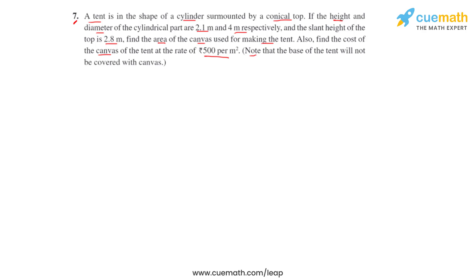So we can create the figure of the tent as per the given information, and it will look like this. Here we know that the height of the cylindrical part is 2.1 meters.